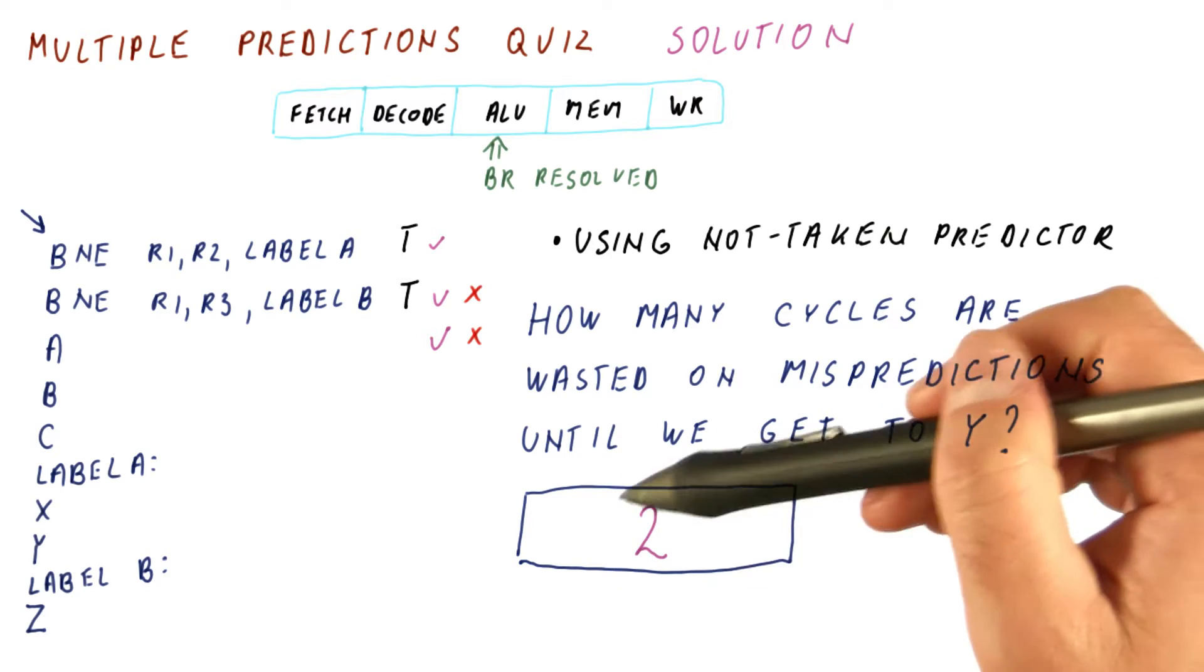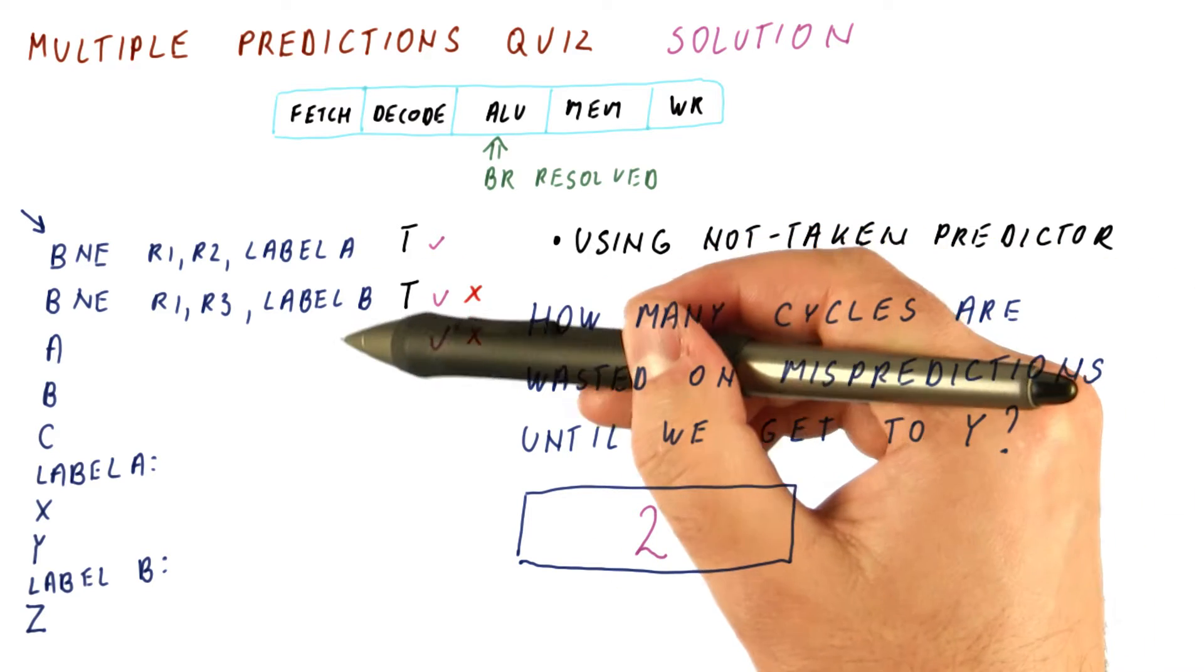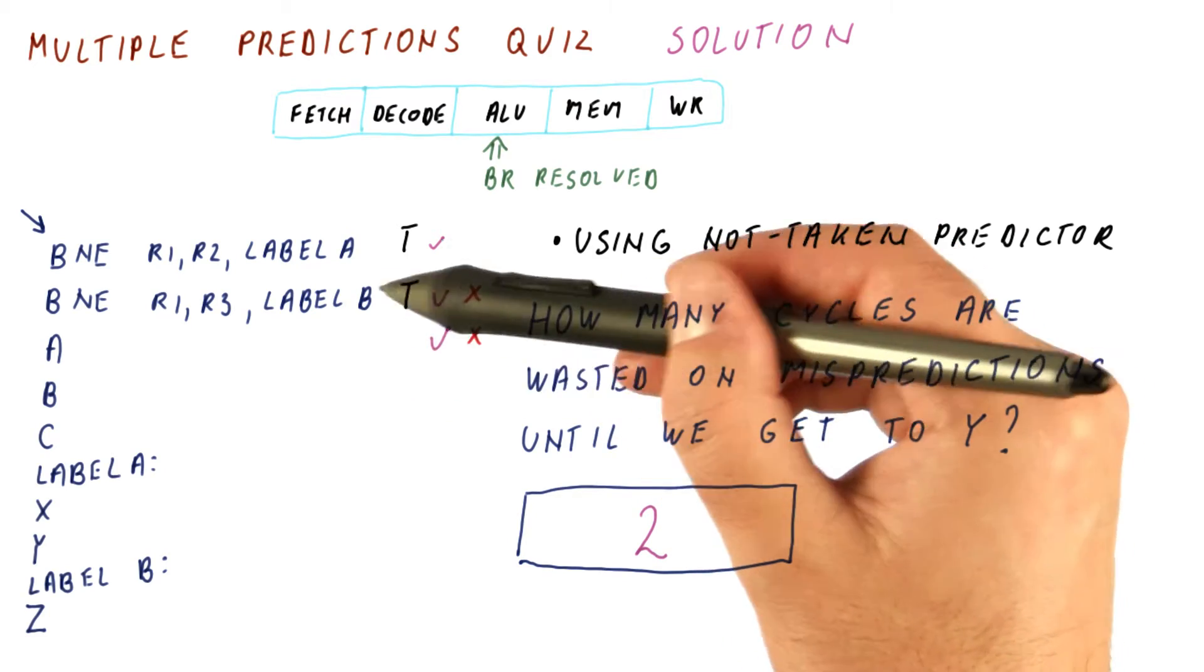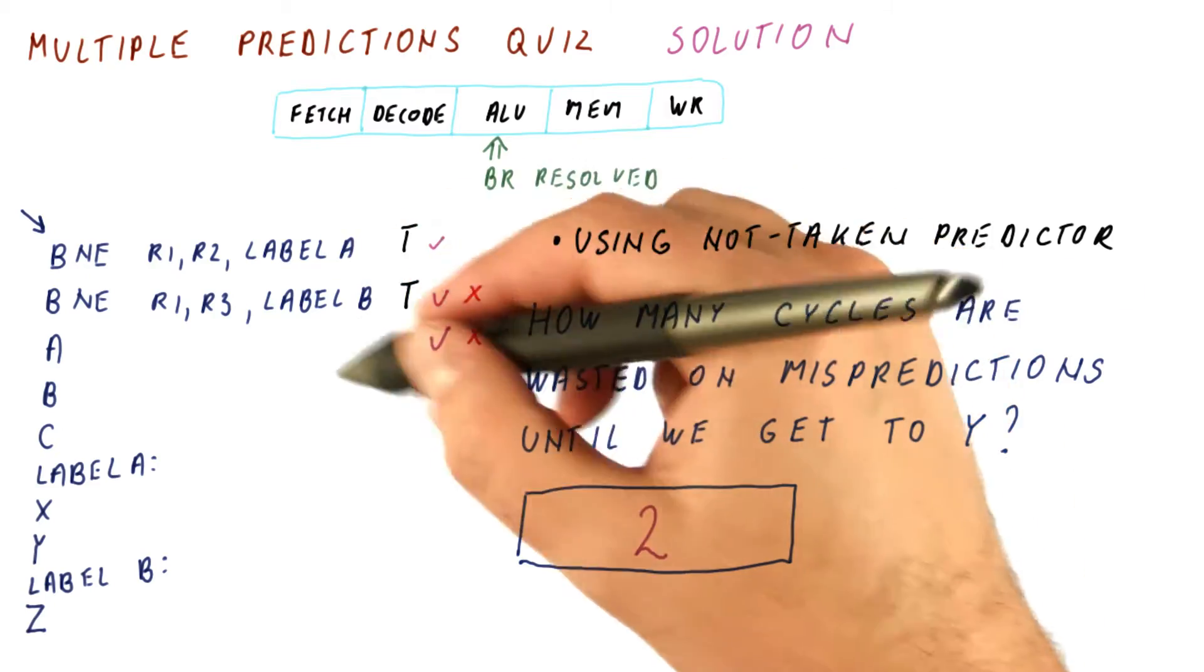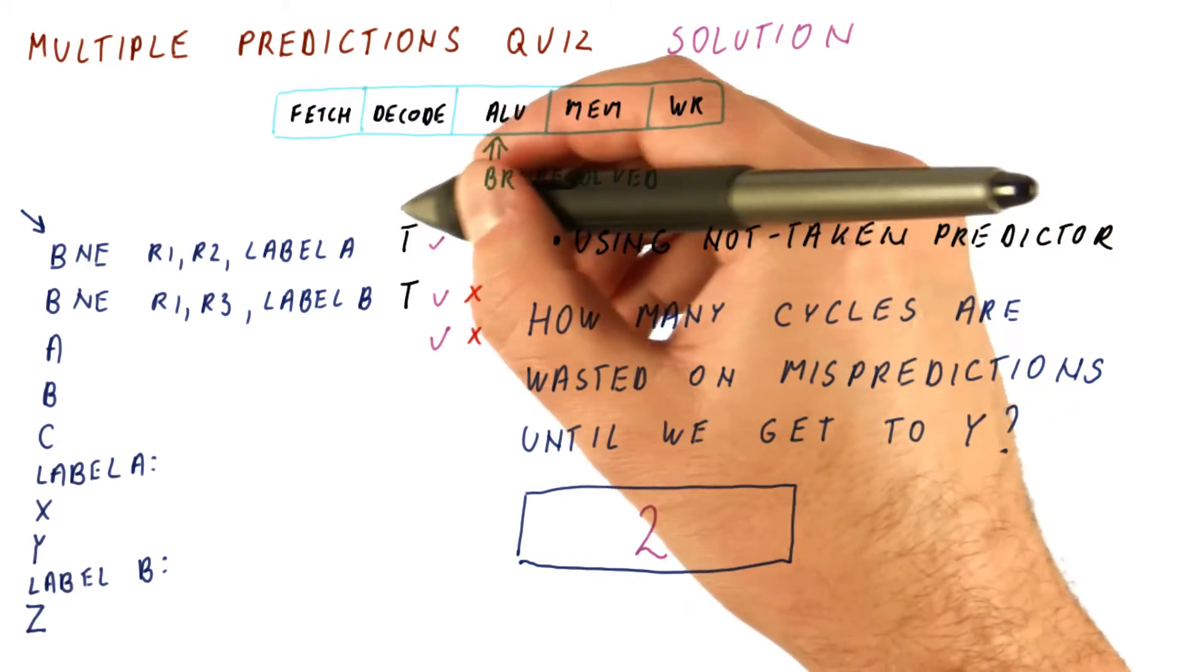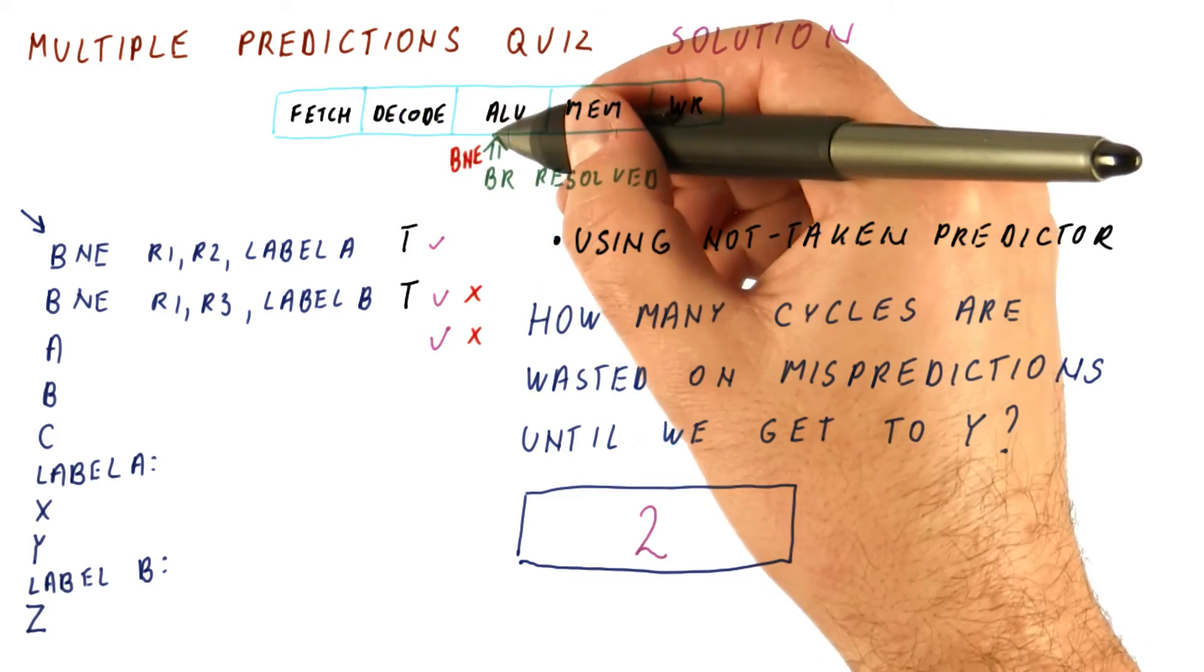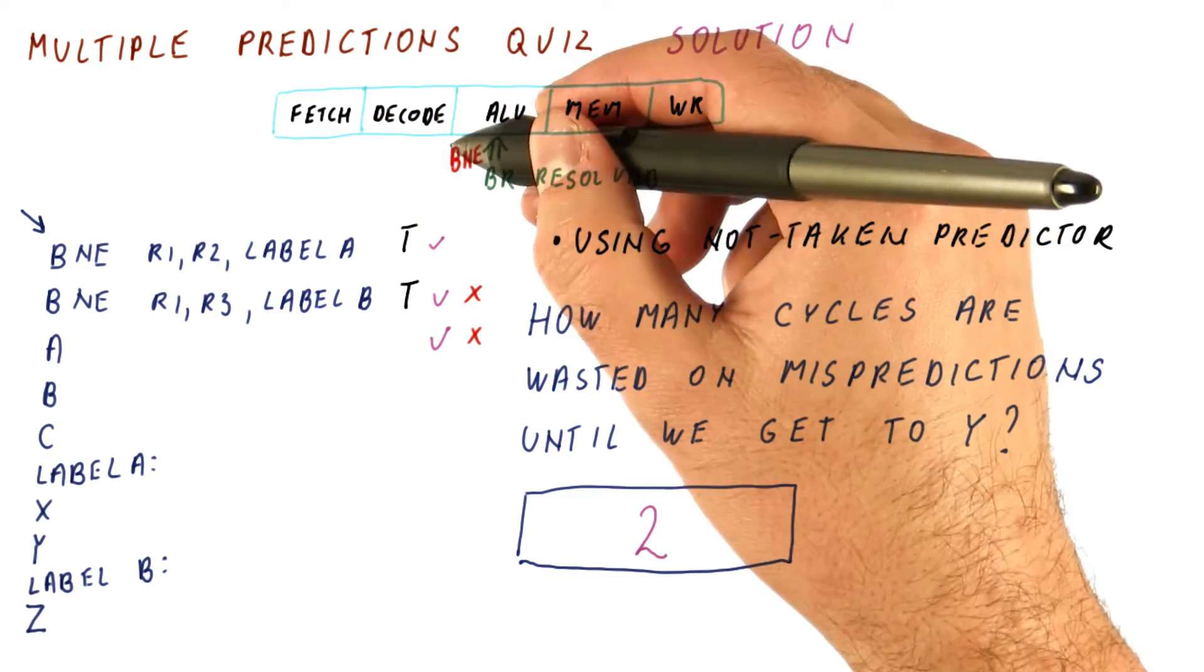But we don't pay additional penalties for mispredicted branches that themselves should never have been executed because of mispredictions. Let's see why this is so. It is because the first branch here results in flushing the pipeline when it gets to the stage where branches are resolved.